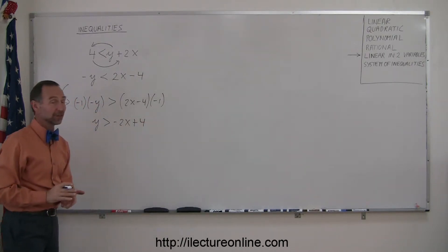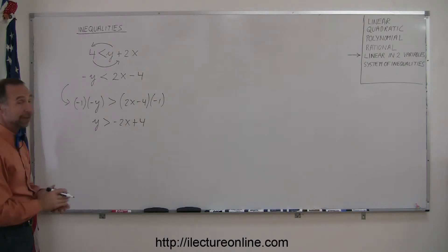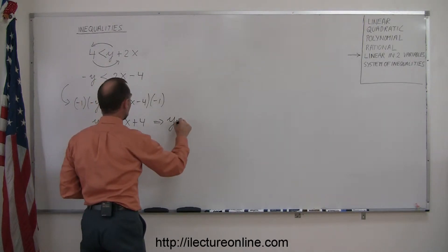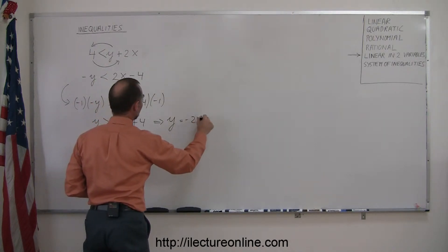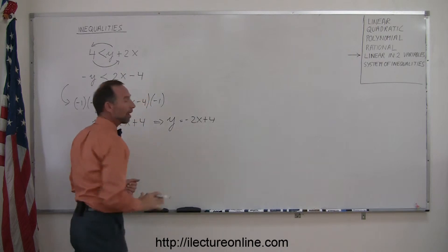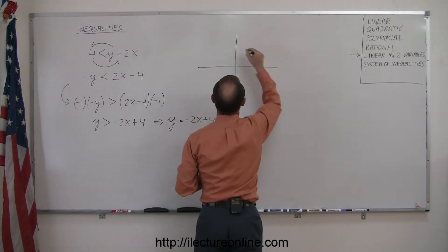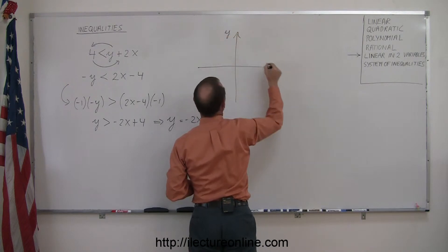Now we're ready to solve this inequality. Again, to find the boundary of the inequality, we want to write its equivalent equation. We write y equals minus 2x plus 4 and plot this on an xy plane. So there's my y-axis, there's my x-axis.